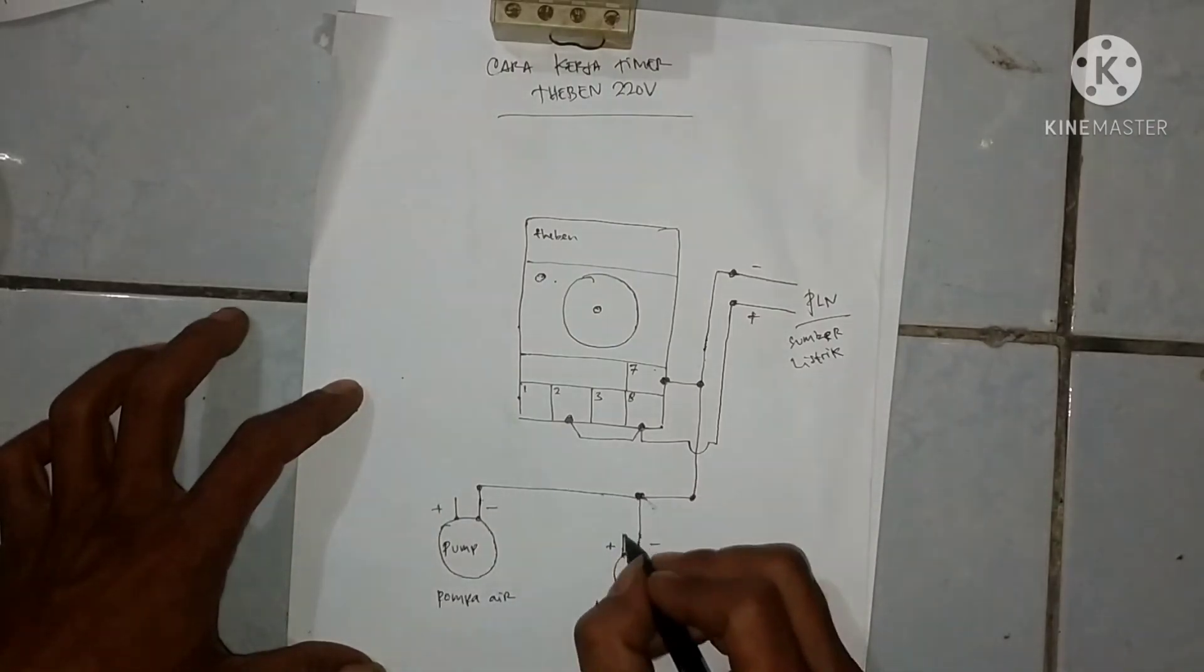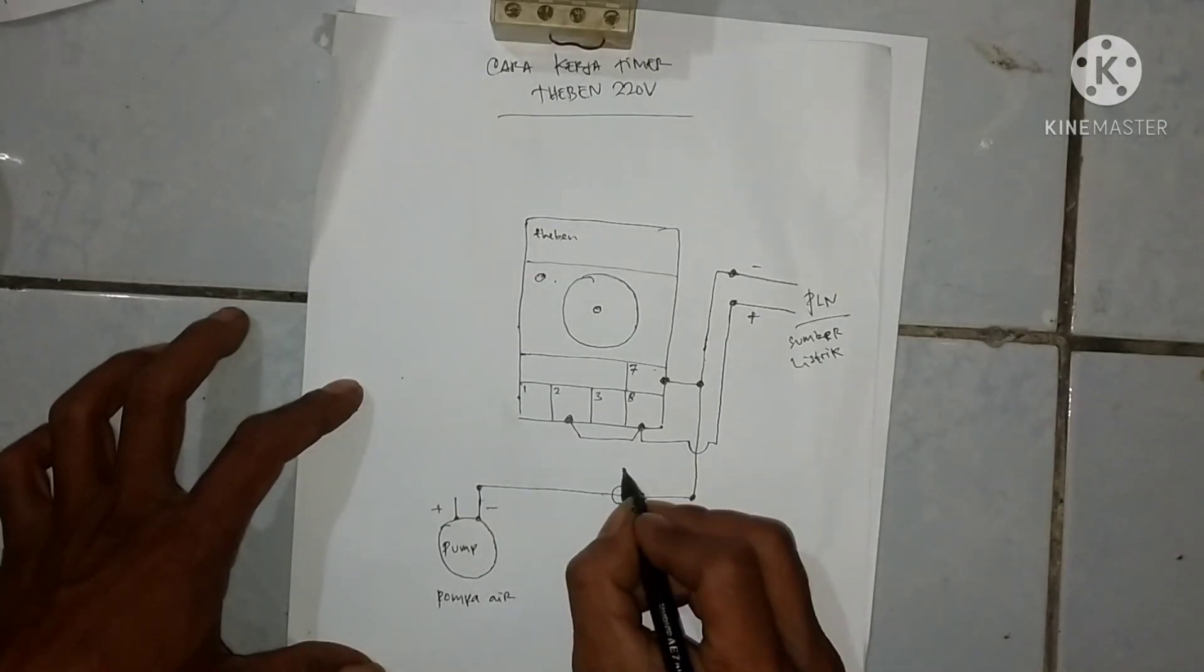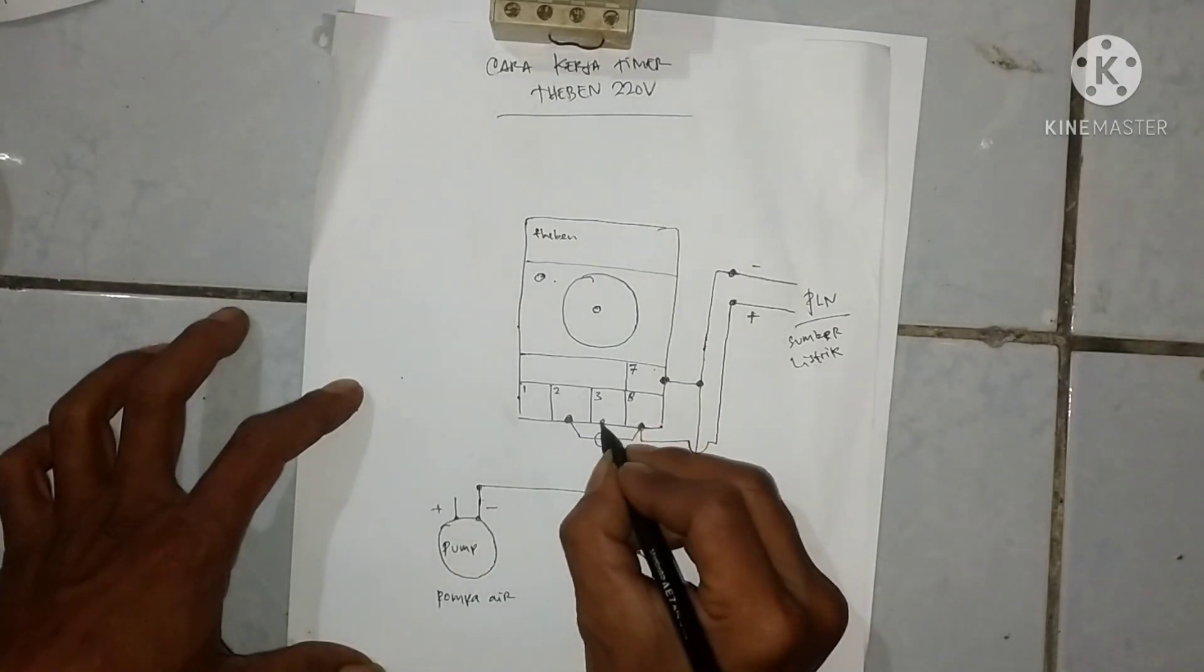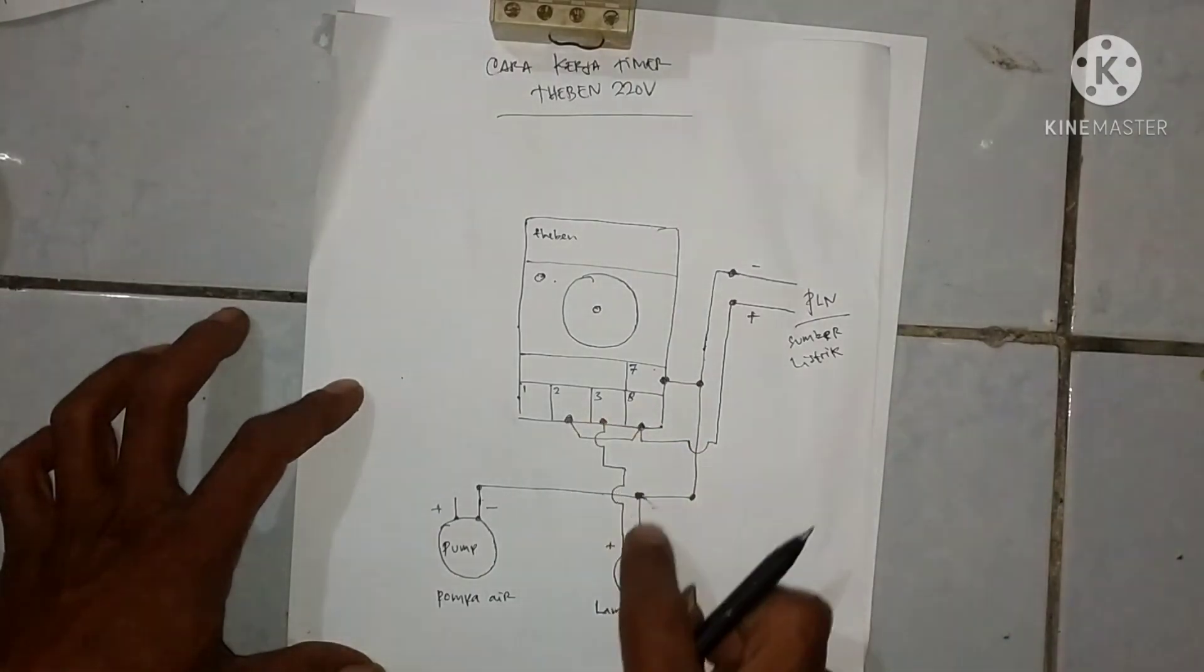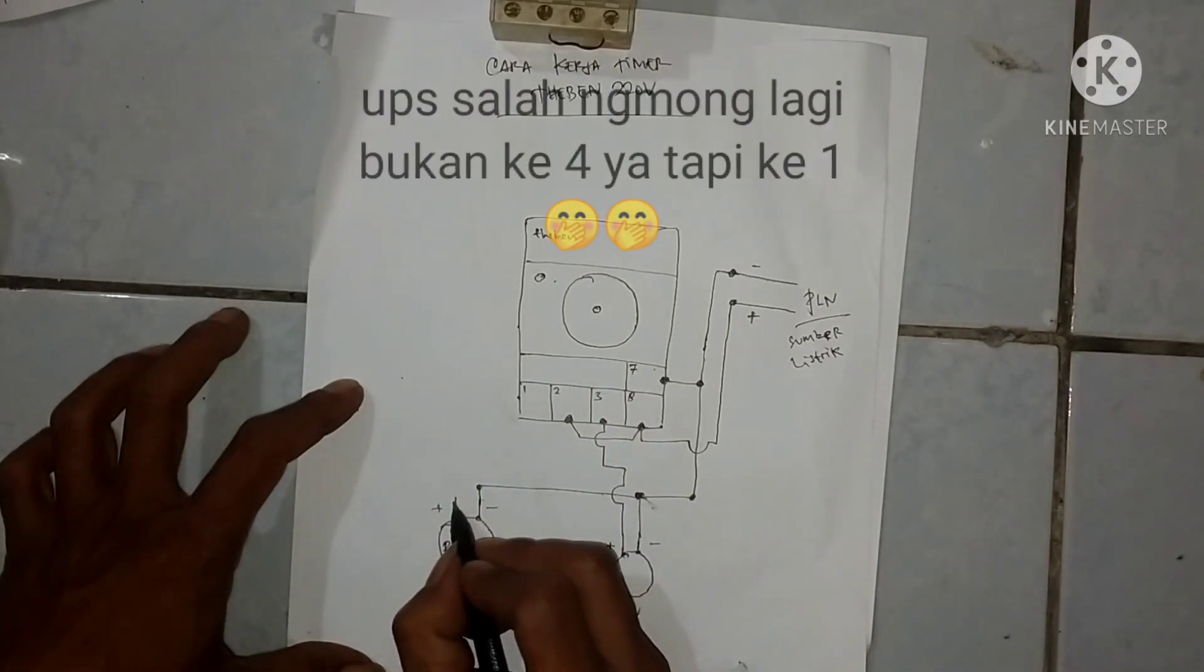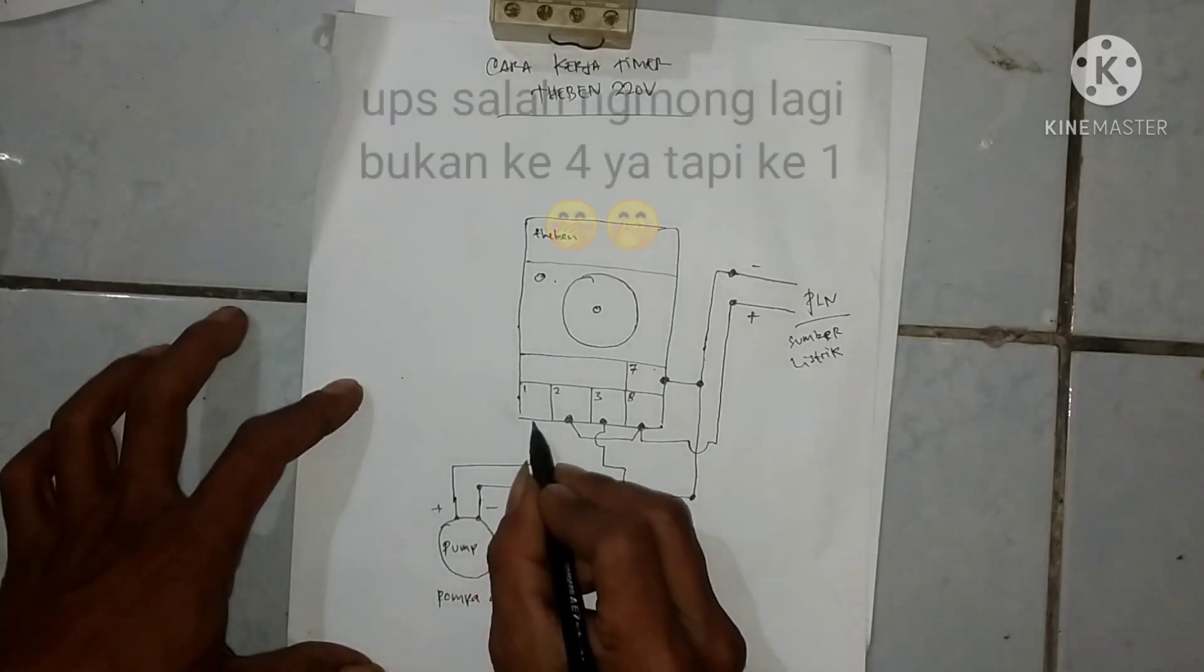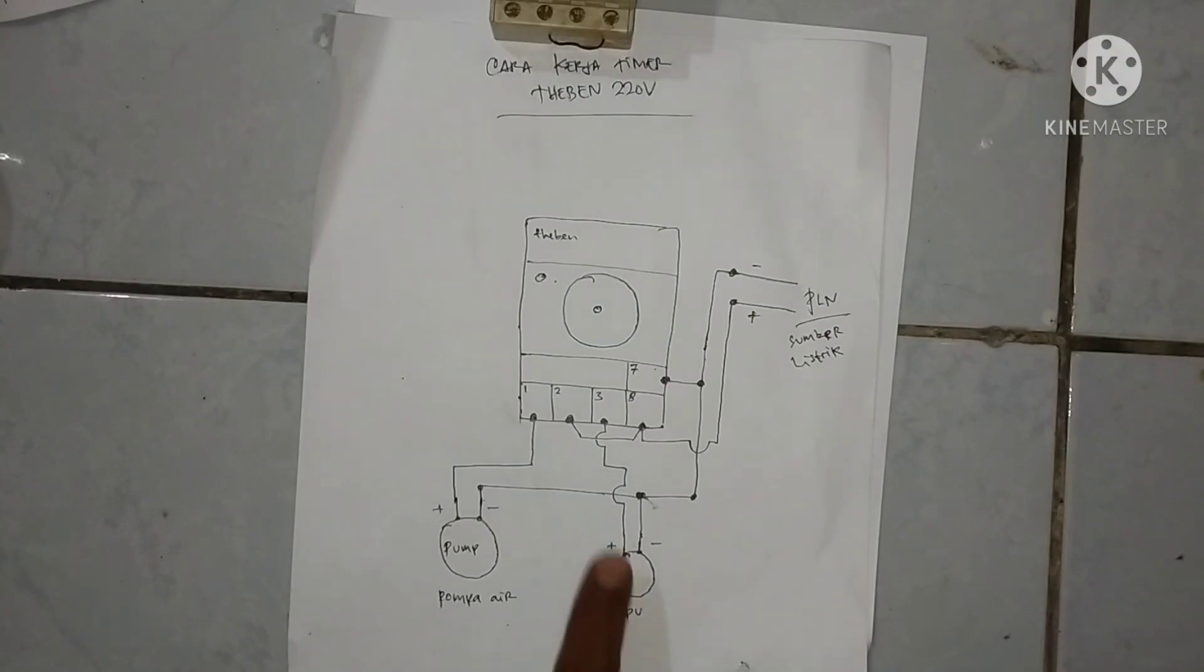Nah sekarang stroomnya si masing-masing beban itu antara lampu dan pompa, nah kita masukin ke antara 3. Nah ini lampu ke 3. Pompa masuk ke 4, eh sorry ke 1. Seperti ini ya kira-kira ya.